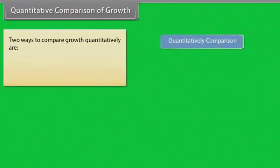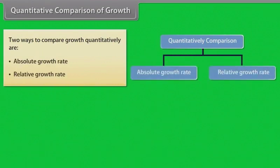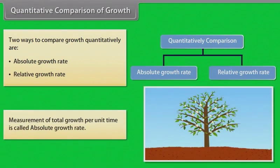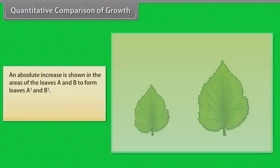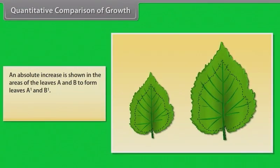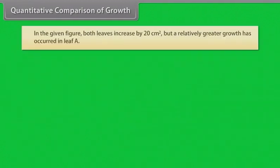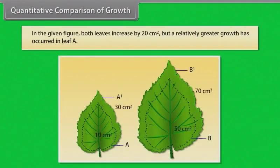Quantitative comparison of growth: Two ways to compare growth quantitatively are absolute growth rate and relative growth rate. Measurement of total growth per unit time is called absolute growth rate. An absolute increase is shown in the areas of leaves A and B to form leaves A1 and B1. Growth of a given system per unit time is called relative growth rate. In the given figure, both leaves increase by 20 cm² but a relatively greater growth has occurred in leaf A.